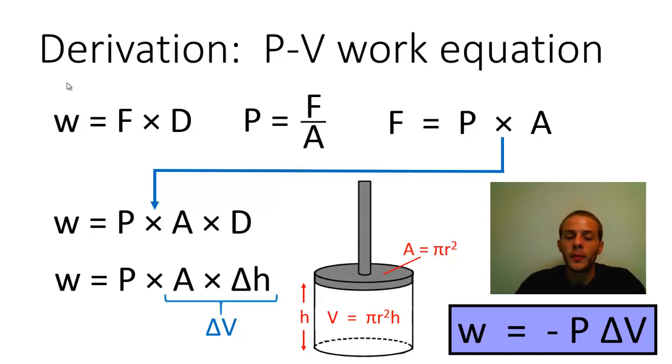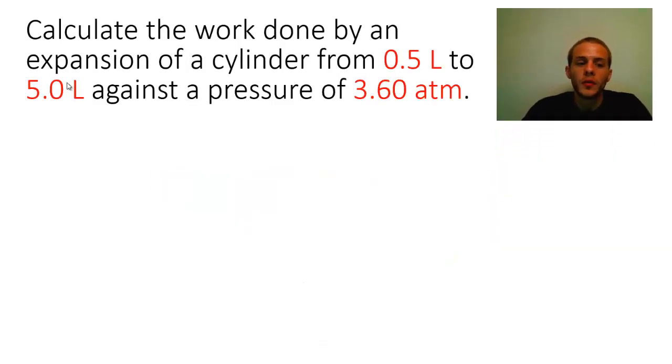So in the next example, we're going to do just one example in which we calculate pressure volume work. So it says to calculate the work done by an expansion of a cylinder from 0.5 liters to 5.0 liters against a pressure of 3.60 atmospheres. So again, we're going to use that W equals minus p ΔV equation, and then we can simply plug in all of the values that we have.